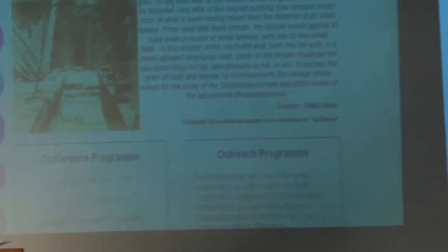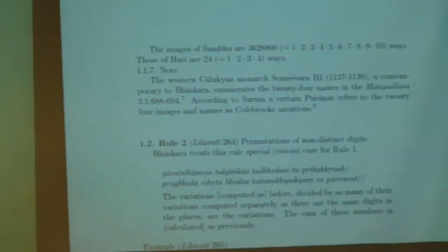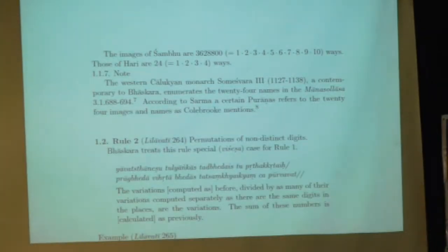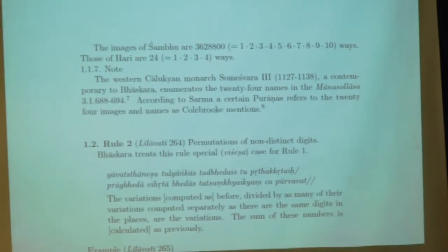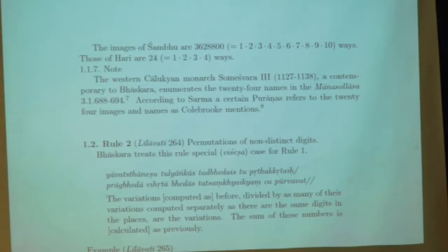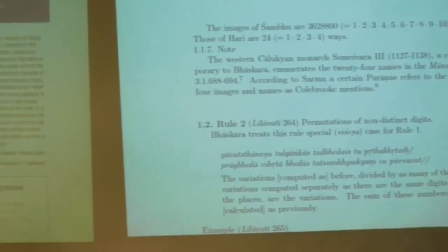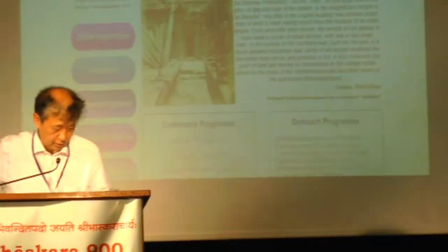My note: the Western Chalukya monarch Someshvara, who reigned 1127 to 1138, was contemporary to Baskara, and enumerates the 24 names in the Manasollasa. I study this from Professor Shambu's work. A certain source refers to the 24 images and their names as Colebrooke mentioned.